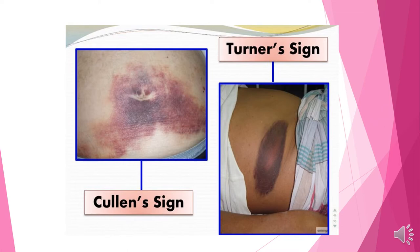The Turner sign refers to bruising in the flank area between the last rib and the top of the hip. It is typically blue or gray discoloration — in this particular picture it looks more purplish. It is a sign of acute pancreatitis and takes about 24 to 48 hours to develop, so the patient may have complaints prior to it ever appearing.